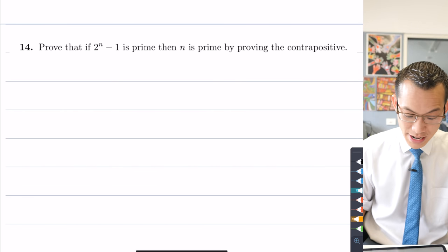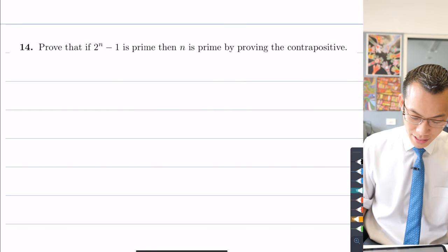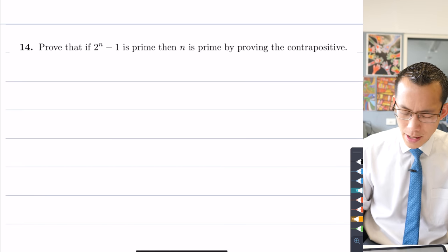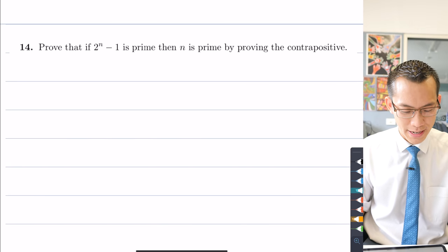Prove that if 2^n - 1 is prime then n is prime by proving the contrapositive. Okay let's think about this for a second.